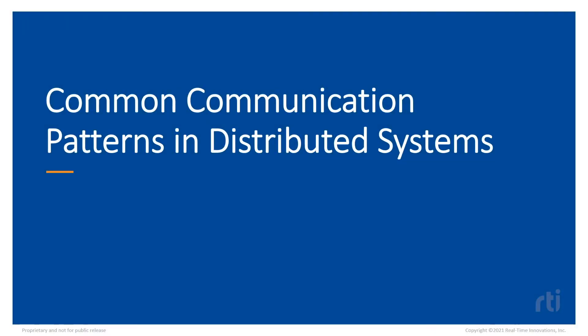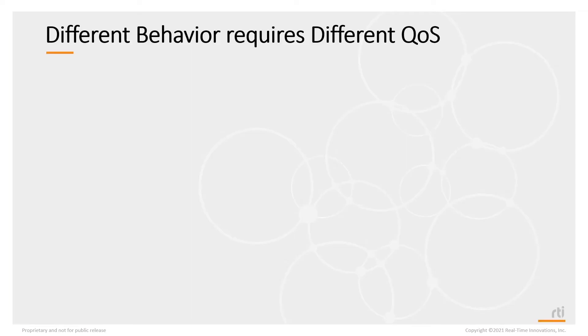In this lesson, we're going to talk about some common communication patterns in distributed systems. Different communication patterns require QoS settings that configure DDS to behave differently. Different communication patterns require different behaviors in DDS, and different behaviors in DDS requires different QoS values to be configured.